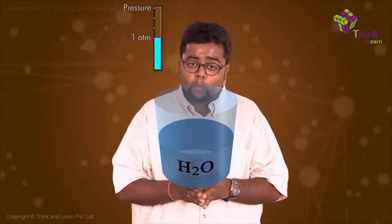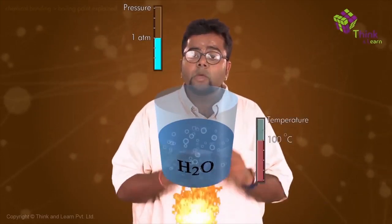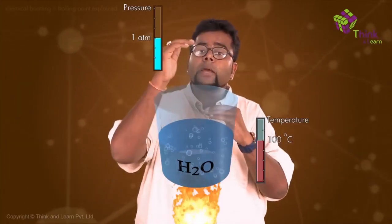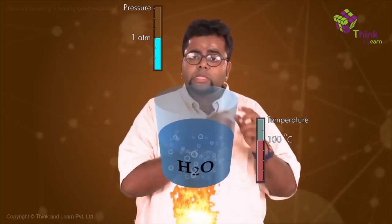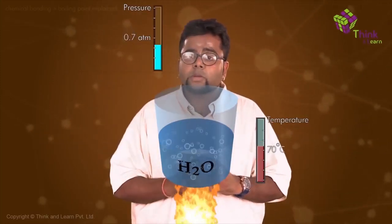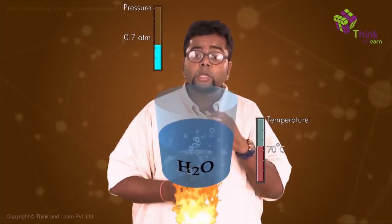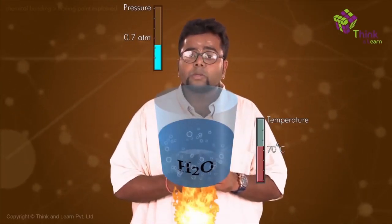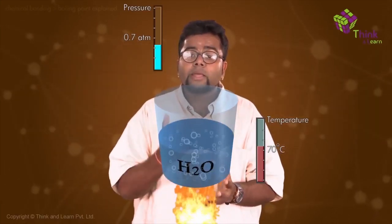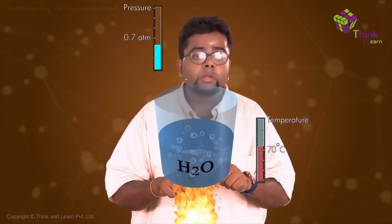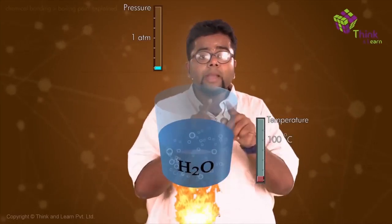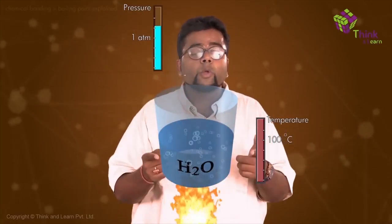Suppose if I have atmospheric pressure fixed at 1 atm and water is boiling at 100 degrees Celsius — because at 100 degrees Celsius, the amount of vapors that water is producing is counterbalancing the atmospheric pressure. Now, if I lower the atmospheric pressure, water would not need 100 degrees Celsius to produce enough vapor to counter the atmospheric pressure. So the amount of heat reduces and the temperature also decreases. Keep decreasing the pressure and the boiling point keeps decreasing; increase the pressure and the boiling point starts increasing.